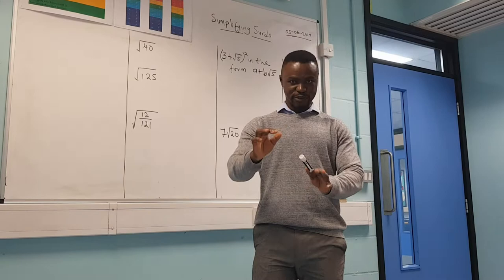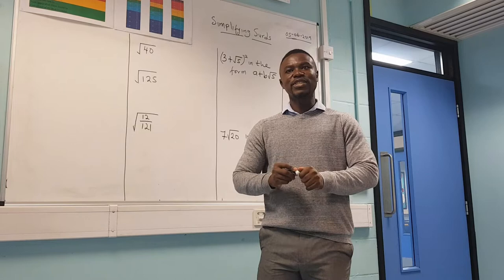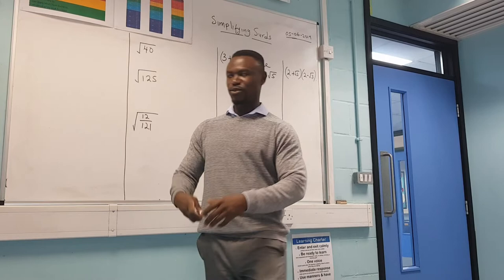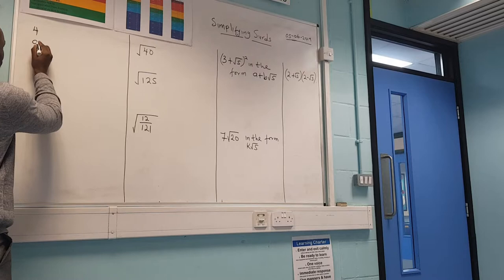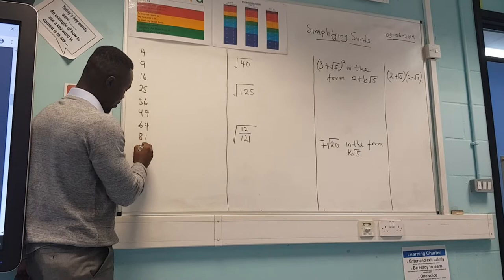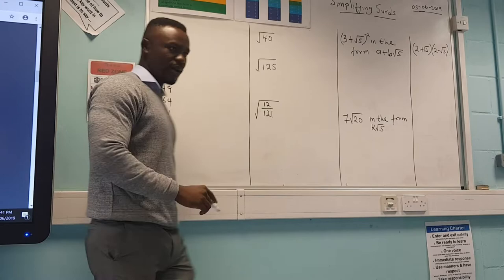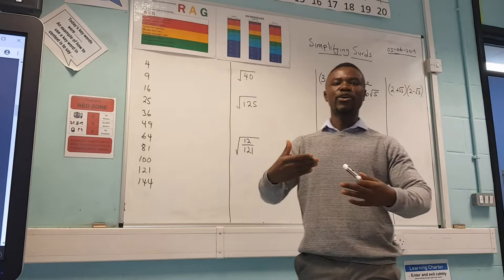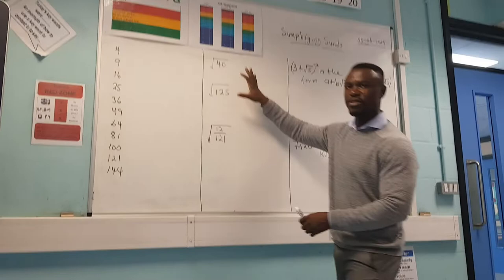The first thing to remember is that simplifying surds only involves using perfect square numbers. The first thing you have to do is write down your square numbers — these are the answers from your times tables when you multiply a number by itself. So two times two is four, meaning four is a square number. Your square numbers are: 4, 9, 16, 25, 36, 49, 64, 81, 100, 121, 144. Write these down to help you and make it easier.